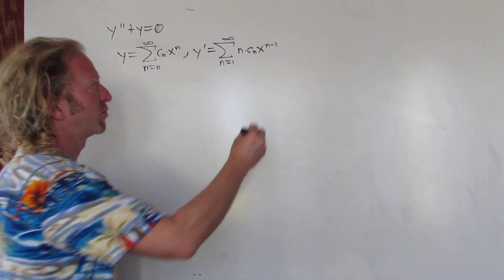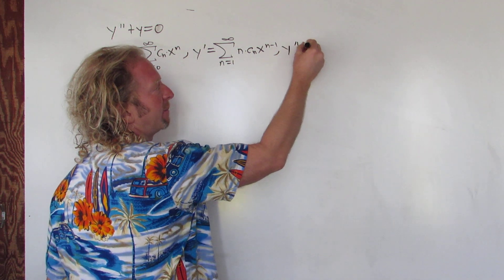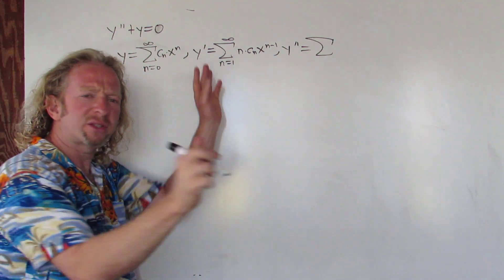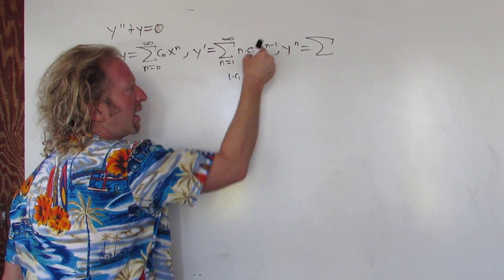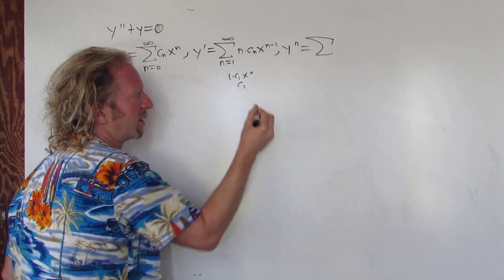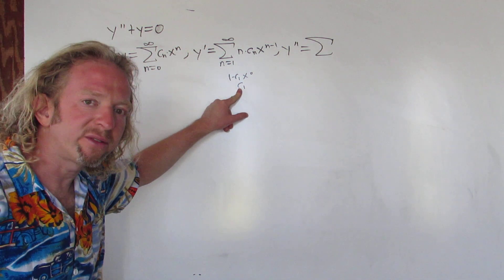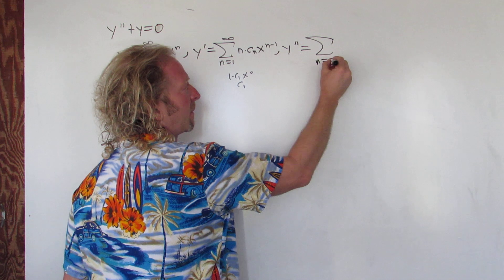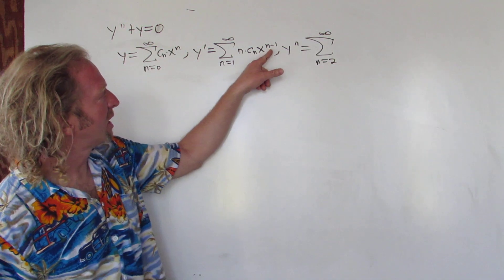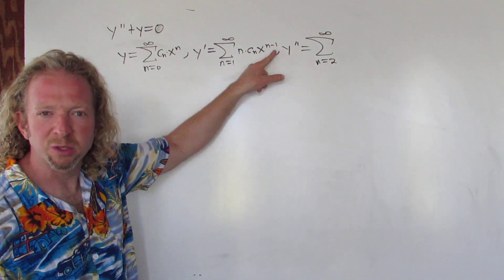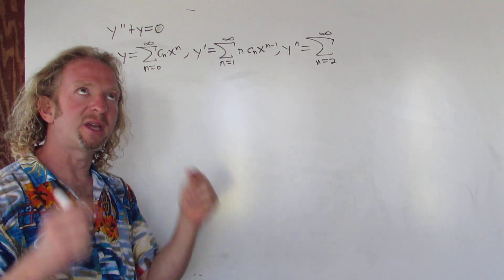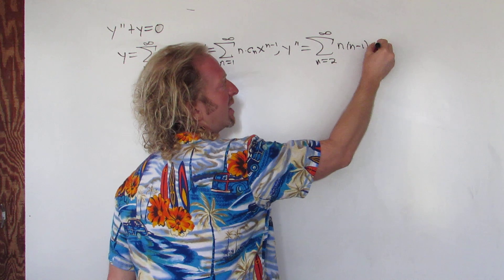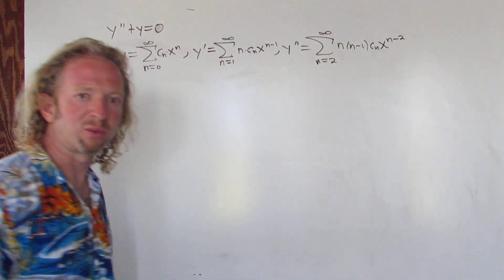Then take the derivative again — y double prime. If you plug in 1: that's 1 times c sub 1 times x to the 0, so that's just c sub 1. If you take that derivative, it's 0, so the first term goes away this time. So now you start at 2. The constants hang out, so you put the n minus 1 in the front: it would be n times n minus 1, c sub n, x to the n minus 2.